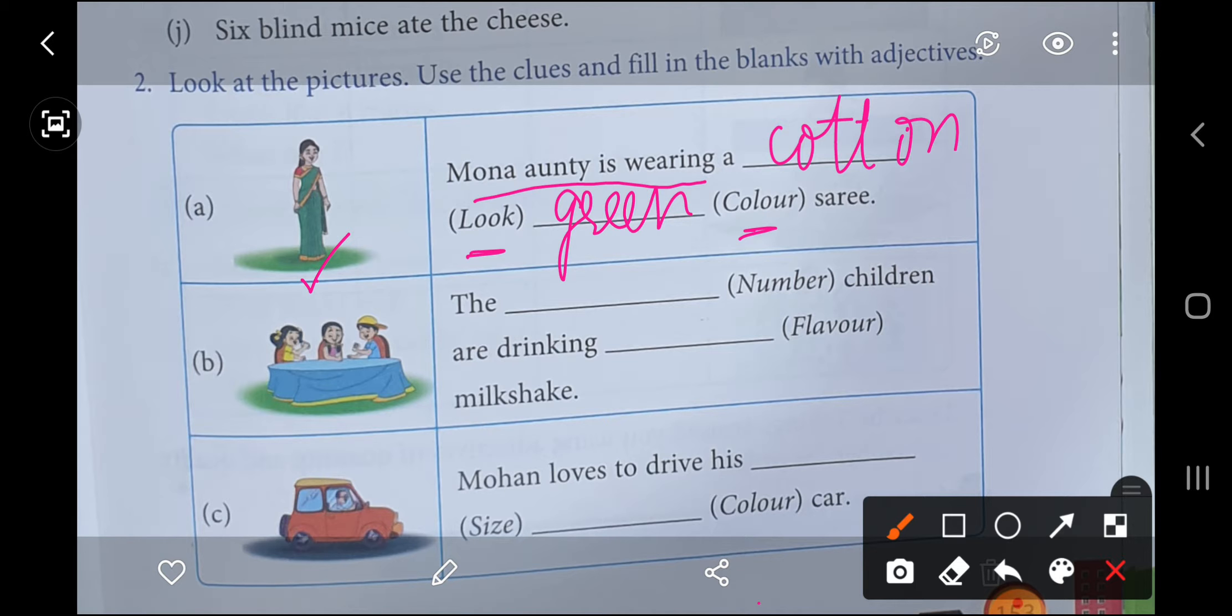Next one is, the dash children are drinking dash milkshake. Number - count them. One, two, three. Three children. So we will write three here. Three children are drinking, flavor. Milkshake. Bracket says flavor. What flavor of milkshake do you like? Whatever you like, you can write here. There's chocolate milkshake, strawberry milkshake, you can write anything. I like chocolate, so I am writing chocolate here.